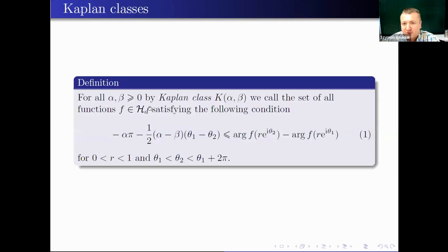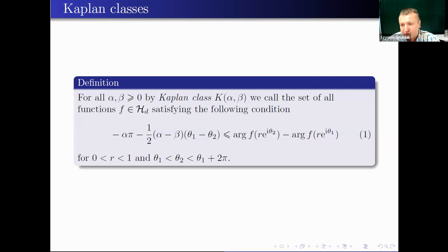Now I will show the definition of Kaplan classes once more. For all α, β greater than or equal to zero, the Kaplan class K(α,β) is the set of all functions f belonging to HD satisfying a volume condition. On the right side of this condition you have the difference between arguments of function f — the angles of f obtained at two points from the same circle of radius r.